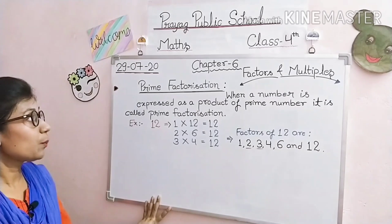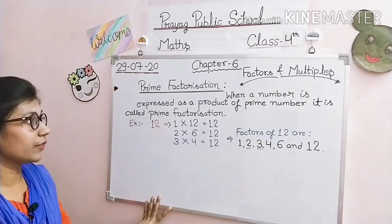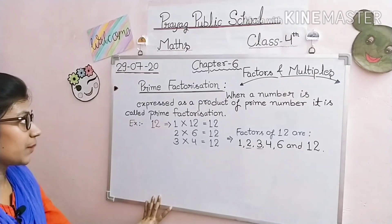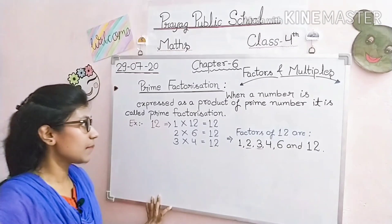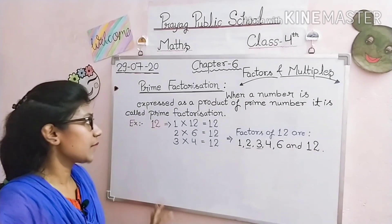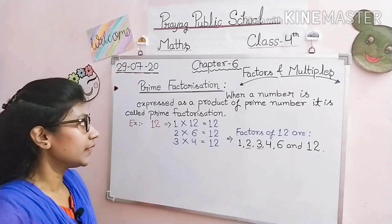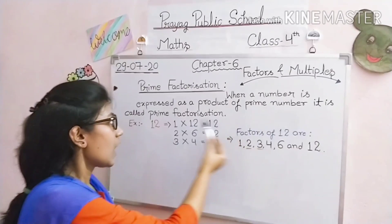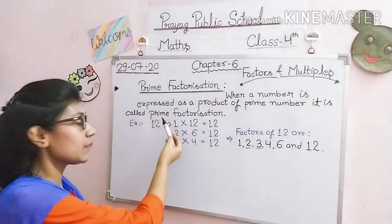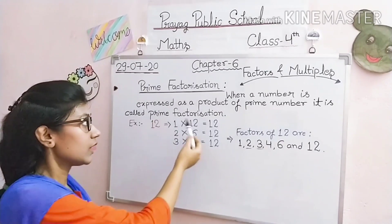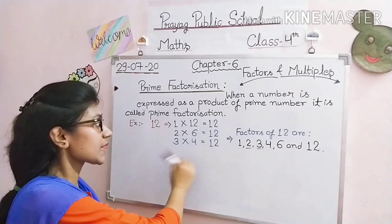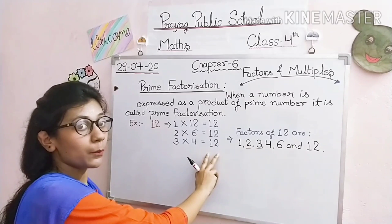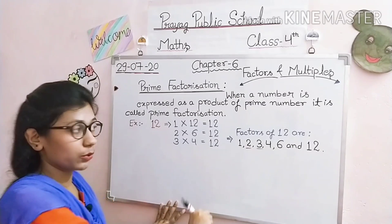तो prime factorization की definition क्या है? When a number is expressed as a product of prime numbers, it is called prime factorization. जब भी कोई भी दिया हुआ number हम prime numbers के product के form में express करते हैं — express मतलब व्यक्त करना — तो वो process prime factorization होता है।